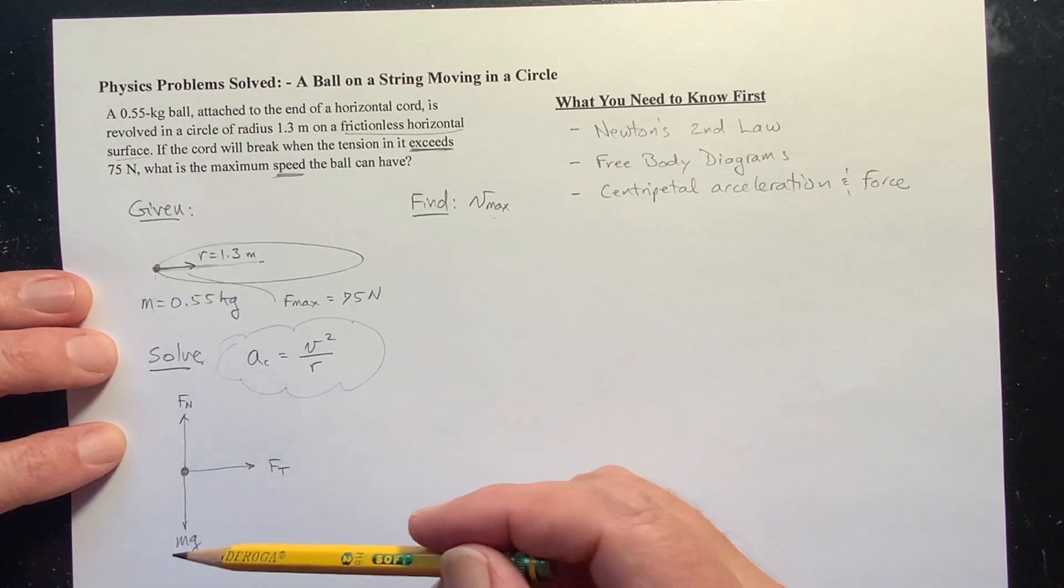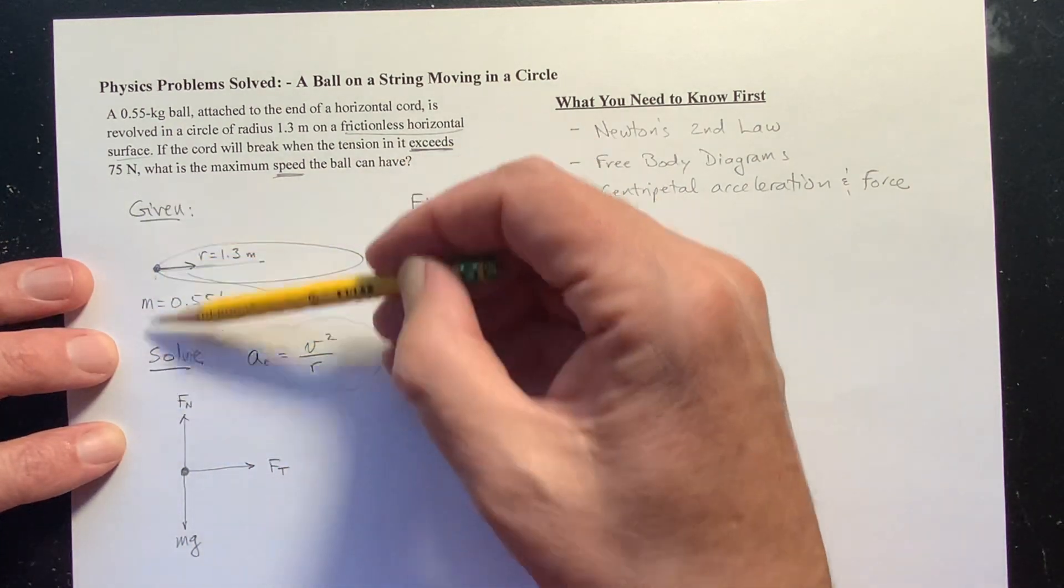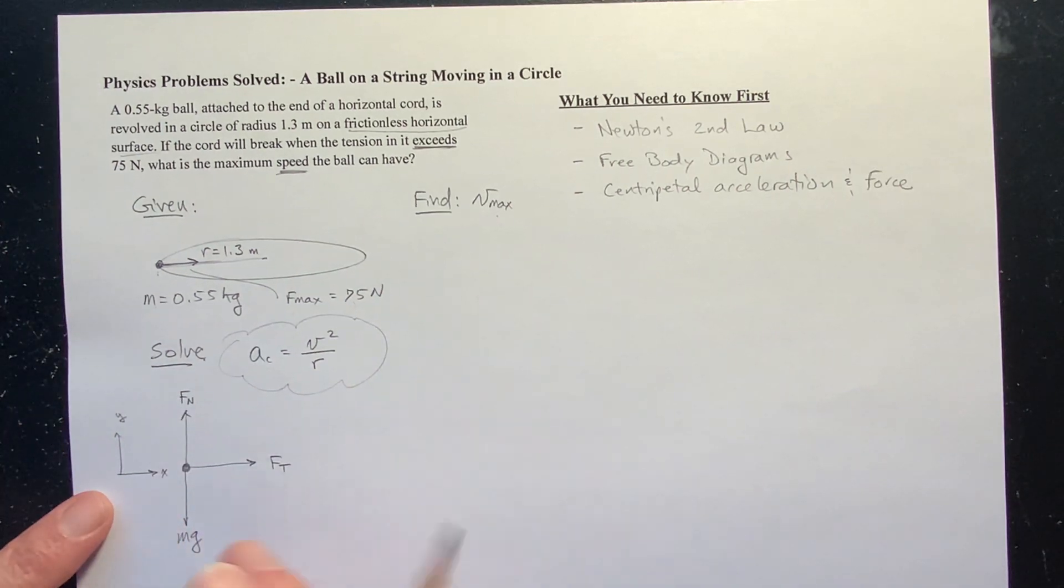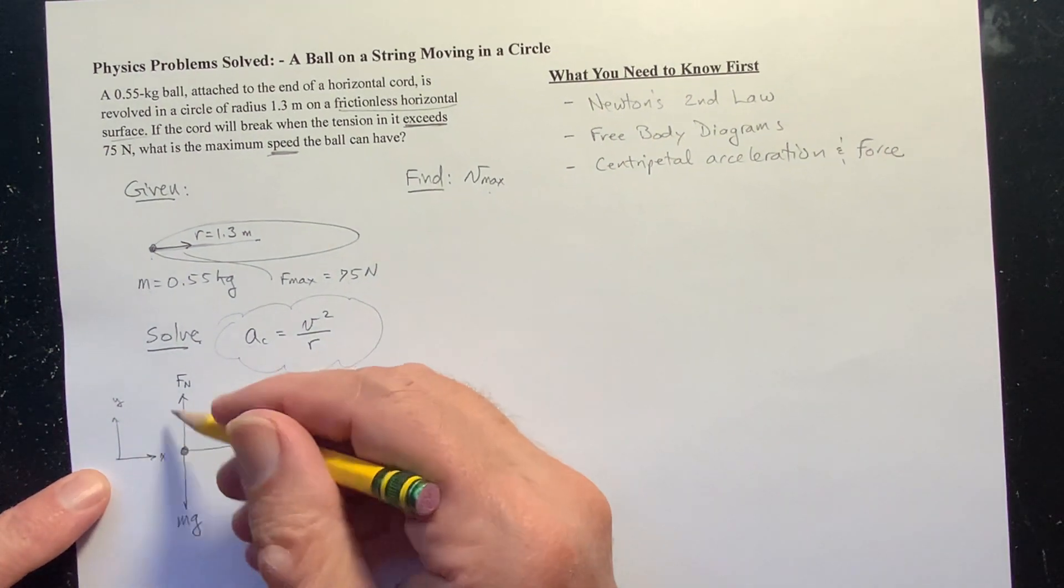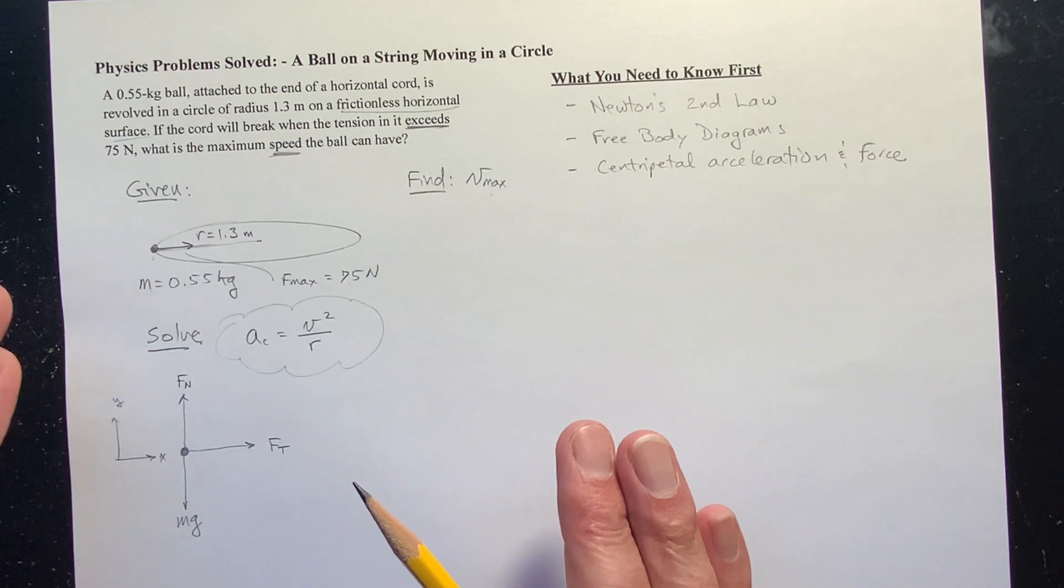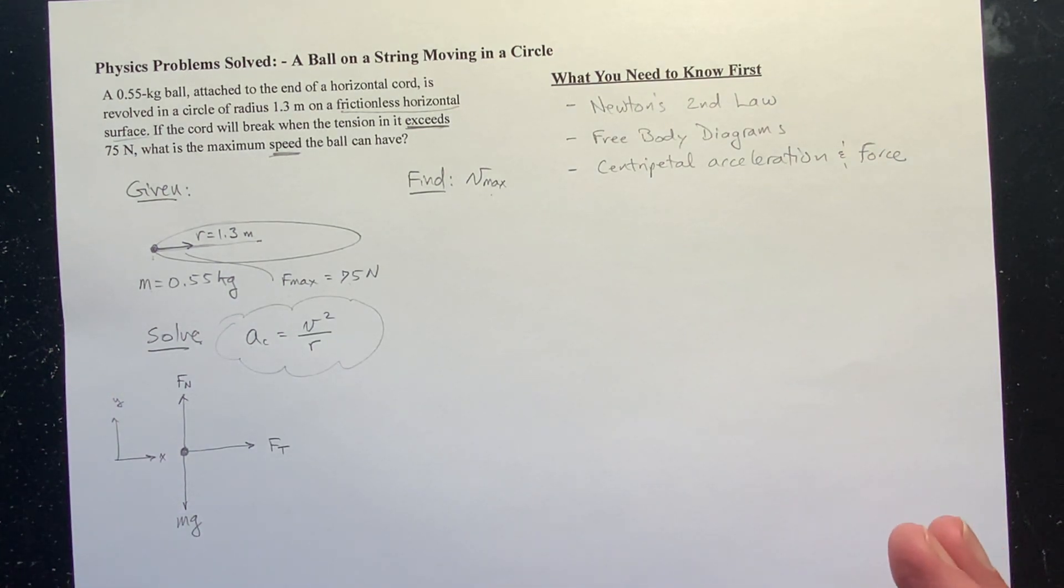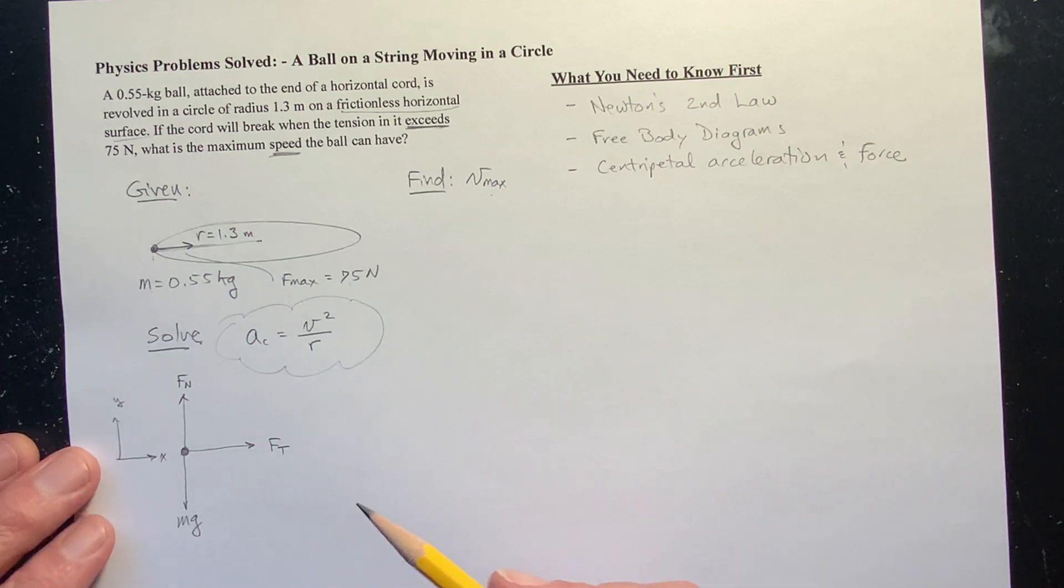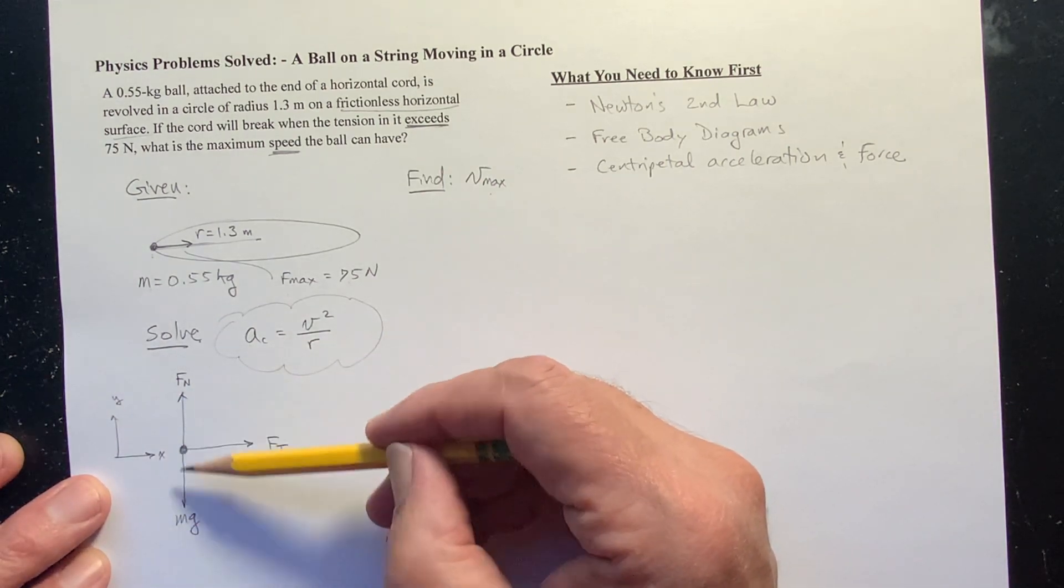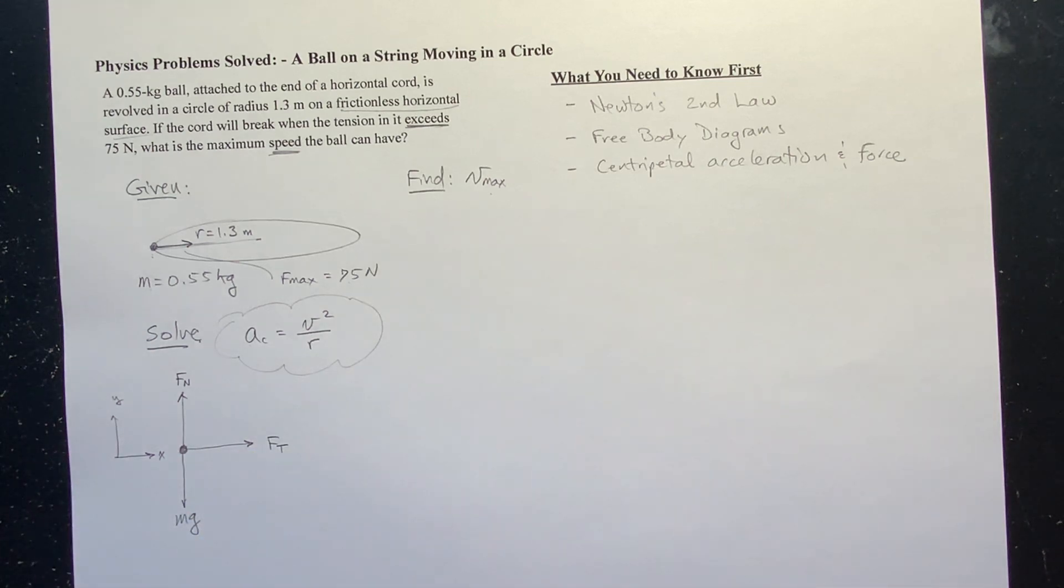Now, there is no motion at all in the y direction here. Let me identify that. I'm going to call this the x direction and this the y direction. And I'm going to say in the y direction, the ball's moving in a horizontal circuit on this horizontal plane. Y is above or below that plane, and there's no acceleration, there's no velocity in the y direction. And that means that the net force in the y direction has to be zero. And so that means that this normal force has to be equal to the weight. That's not really necessary to solve this problem, I just want to point that out.